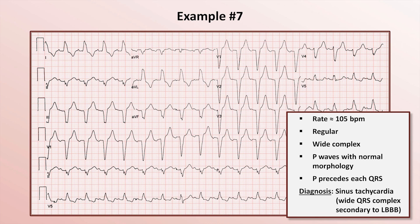There are also ST depressions and T-wave inversions in those same leads. In addition, the complex in V1 consists of a deep QS complex with no R wave, followed by mild ST elevation and prominent T waves. Classic left bundle branch block.